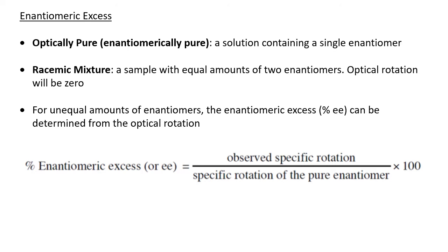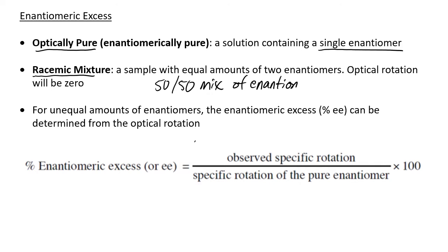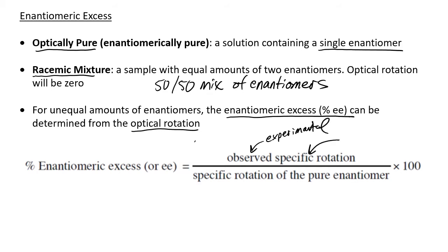If a sample has a mixture of enantiomers that is not 50-50 — if you have more of one enantiomer than another — we say that solution is not enantiomerically pure. If you have a sample containing only one single enantiomer, we say it is optically pure. A racemic mixture means a 50-50 mixture of enantiomers.